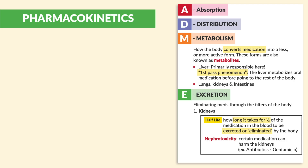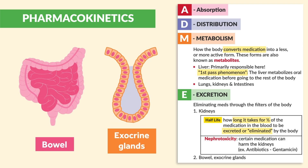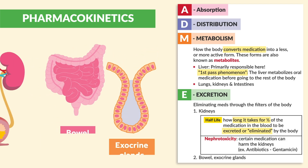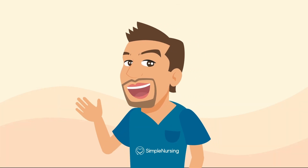Half-life is so important because giving too much can cause the patient to go into overdose and toxic effect, while giving too little means the client won't get the benefits from the medication. The next key term is nephrotoxicity — certain medications can harm the kidneys. Nephro means kidneys, and toxicity means toxicity. For example, antibiotics like gentamicin can be really harmful to the kidneys. Other ways to eliminate from the body include the bowel and exocrine glands, but to a lesser degree than the kidneys, which take on the majority of the workload.